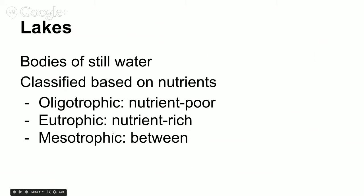Lakes are bodies of water that are completely still. They are classified based on nutrients. We have oligotrophic, which is nutrient poor; eutrophic, which is nutrient rich; and mesotrophic, which is somewhere in between.